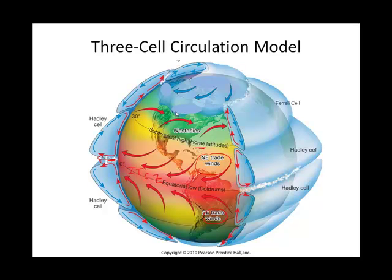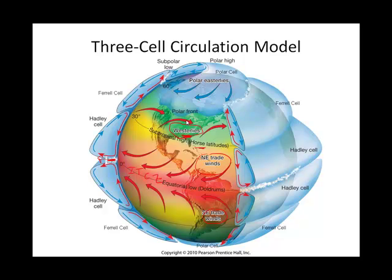The Ferrel cell exists in both hemispheres, and at the Earth's surface it produces the westerlies, or mid-latitude westerlies. The United States is under the influence of these westerlies. At about 60 degrees, the Ferrel cell ends and the polar cells pick up. Think of cold, dense air at the North Pole falling and moving toward the equator in all directions. It's deflected to the right, producing the surface easterly winds we call the polar easterlies.